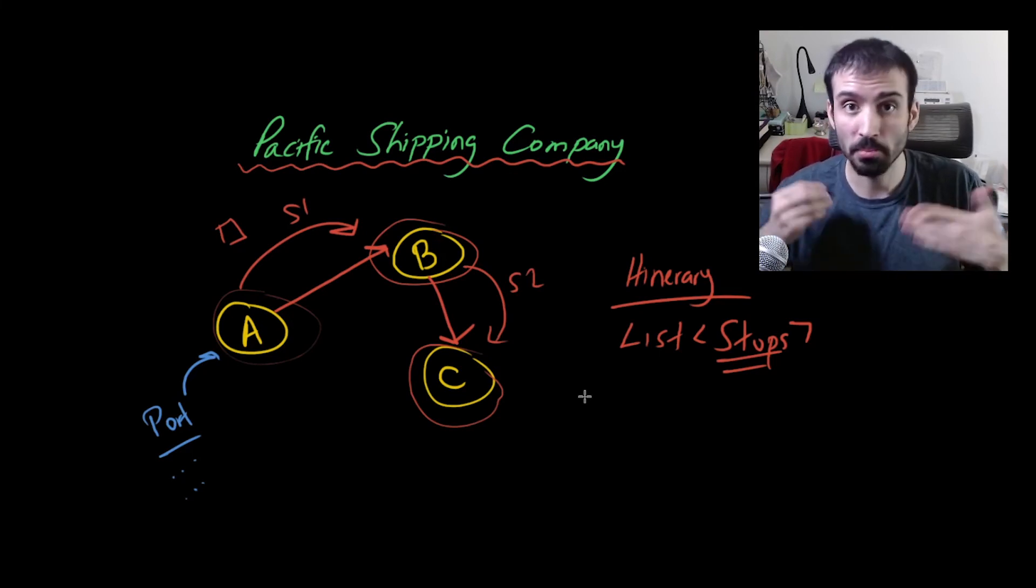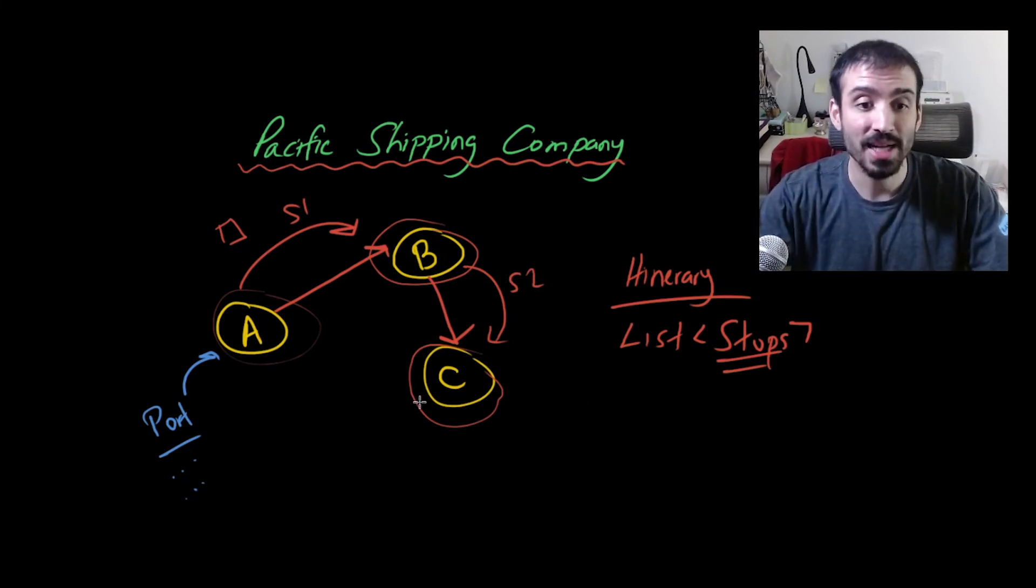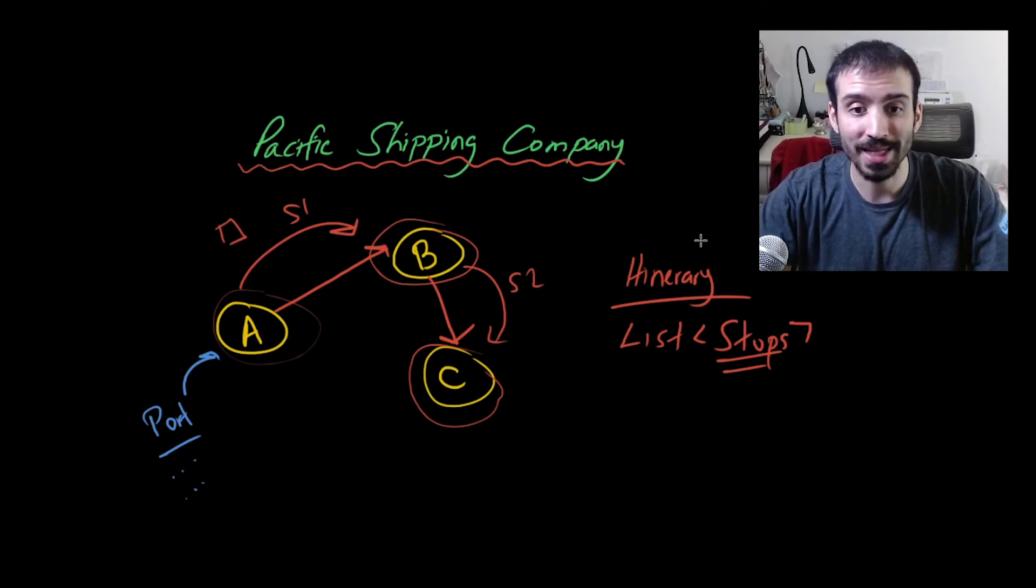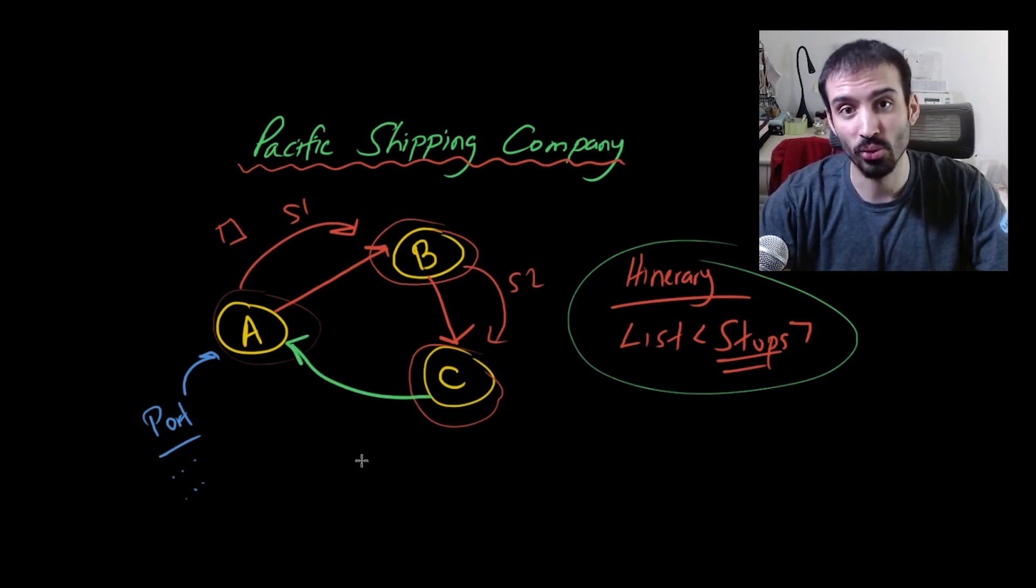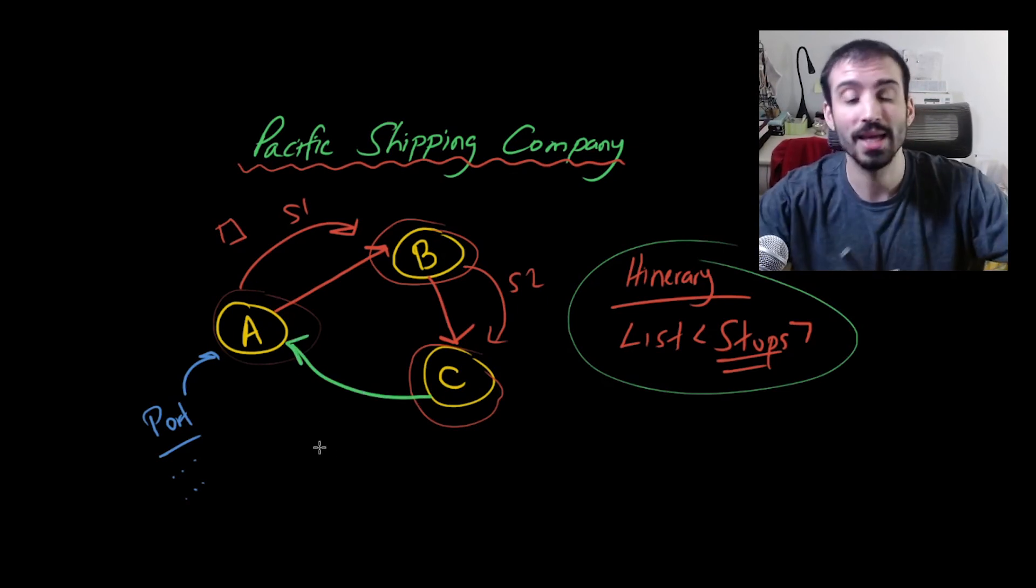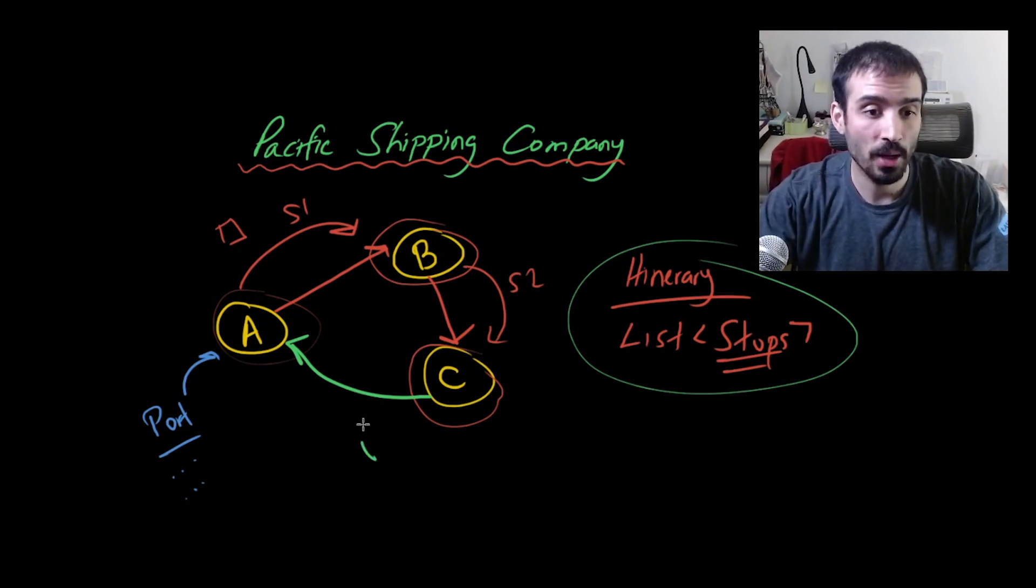Well, that's a policy, right? So that is now saying that in order for this itinerary to exist and be valid, you must always add a return stop that goes back to your original kind of departure location. So that's an example of a policy or a business rule.